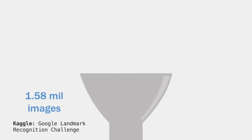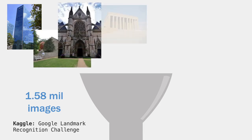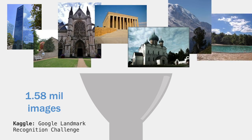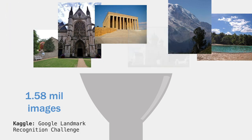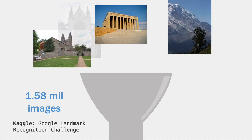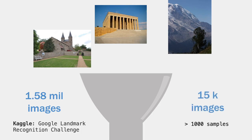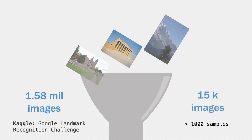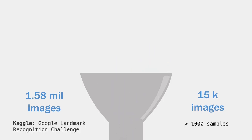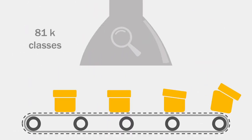Our dataset originates from the Kaggle Google Landmark Recognition Challenge, where there are 1.58 million images and over 81,000 unique landmarks. However, the number of samples across classes is imbalanced, ranging from one to a few thousand per class. Hence we only consider classes with more than 1,000 samples, which leaves us with about 15,000 images. As a result, our trained model is left with seven unique landmarks to classify.